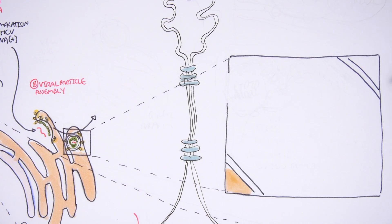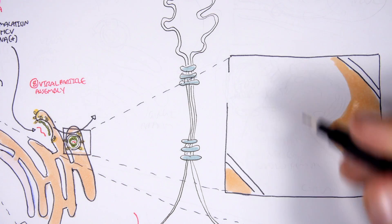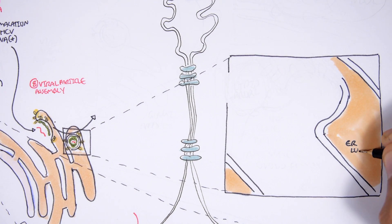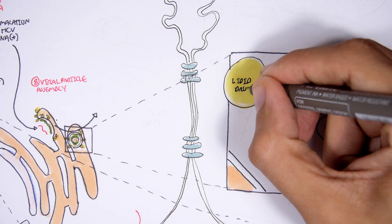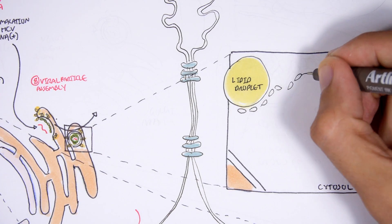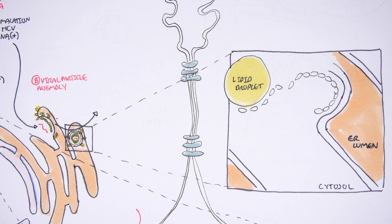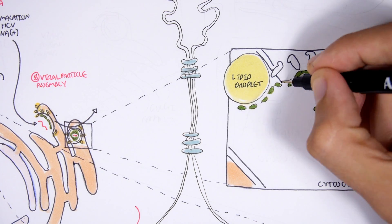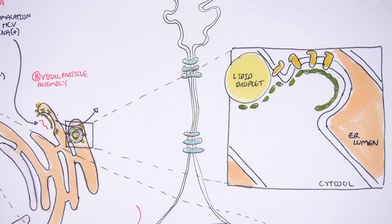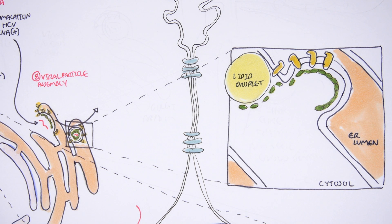Here we have the endoplasmic reticulum, the lumen, and the cytosol. The lipid droplet will essentially help form the hepatitis C viral particle by bringing in the structural proteins — the surface proteins and the capsid. These structural proteins were already produced from translation.